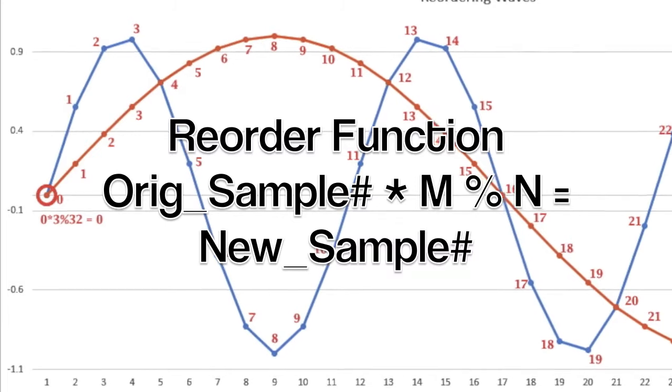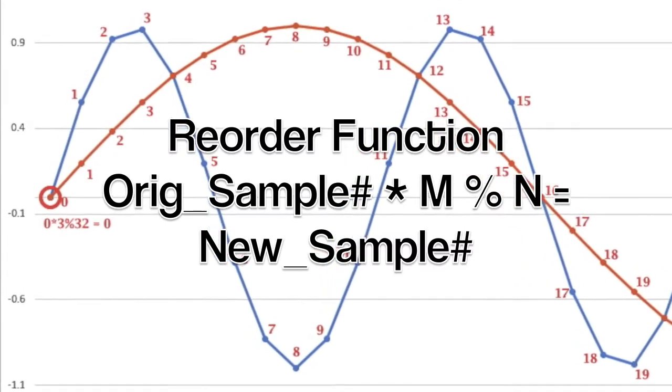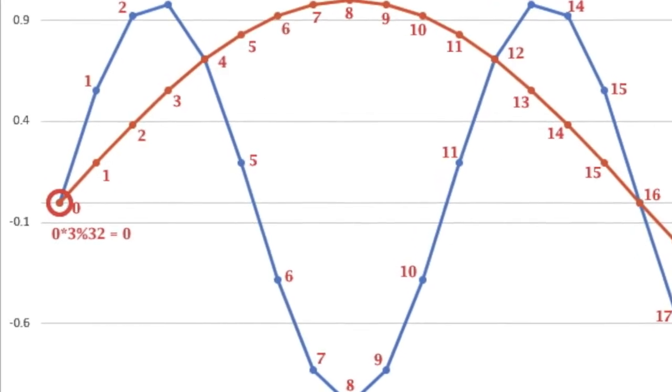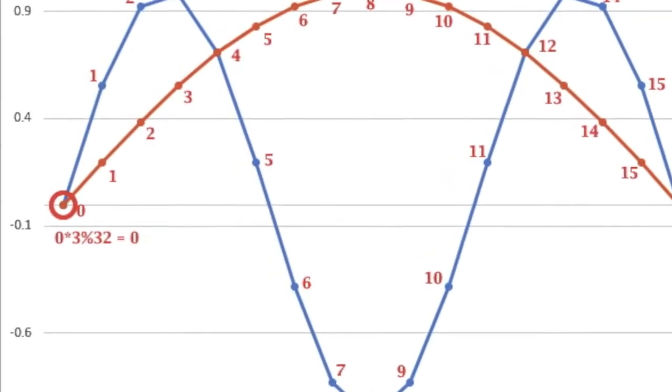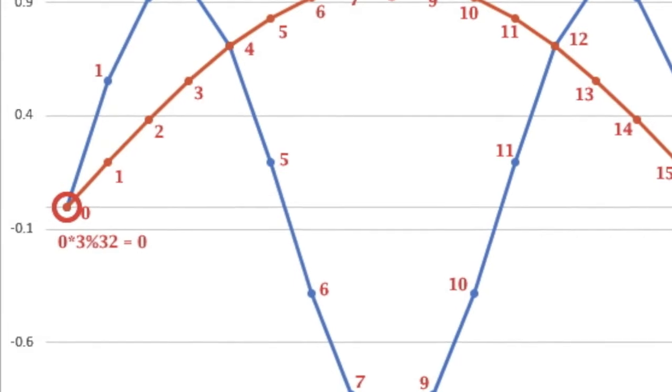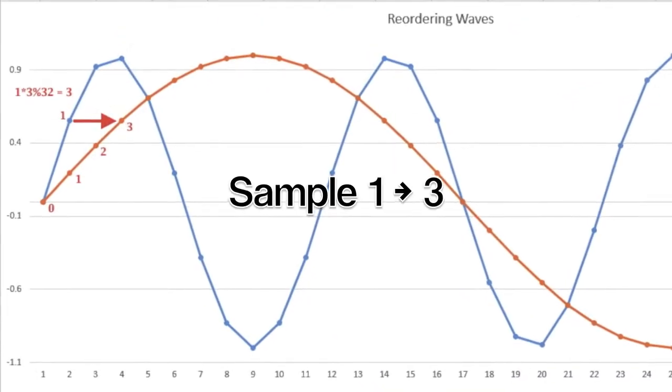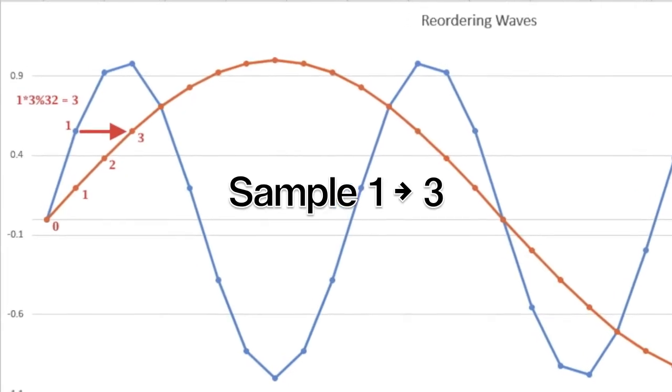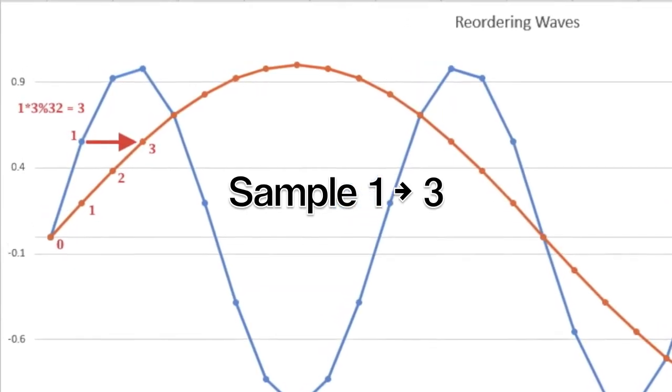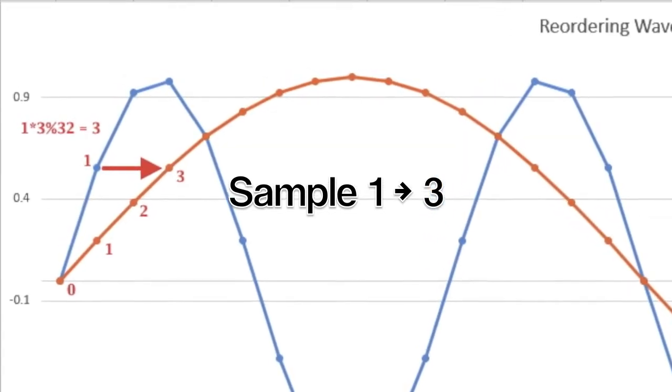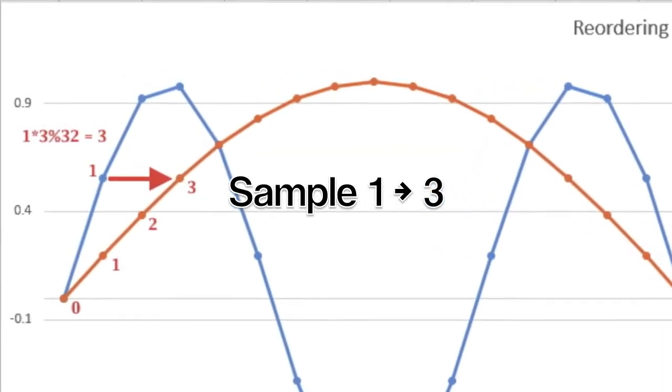The reordering function applied to the first sample, sample zero, is easy. Zero times three is zero. Don't worry about the modulo or percent operator right now, that won't apply for a while. Sample zero stays where it is. It never moves in the reorder function. For sample one, one times three is three. Again the modulo operator has no influence.